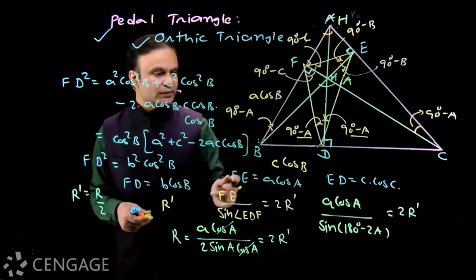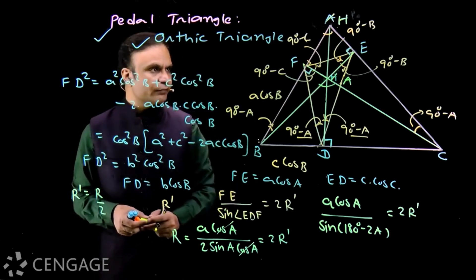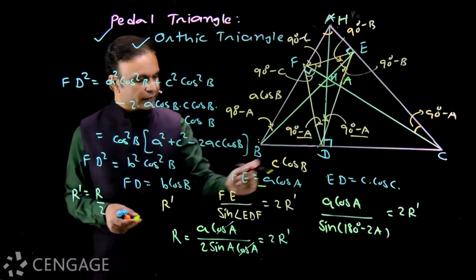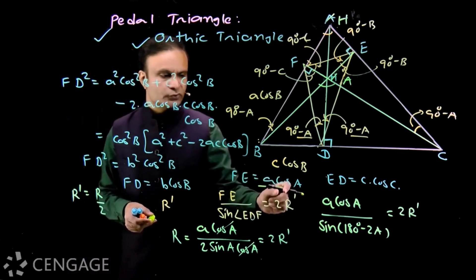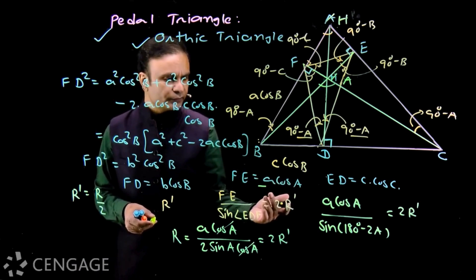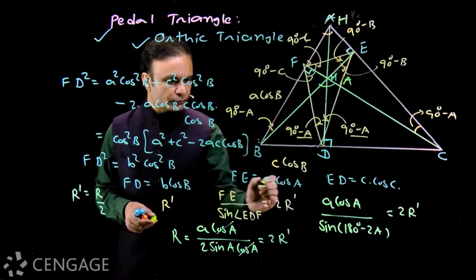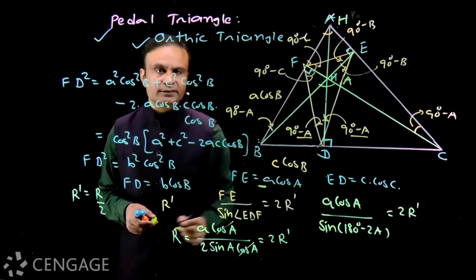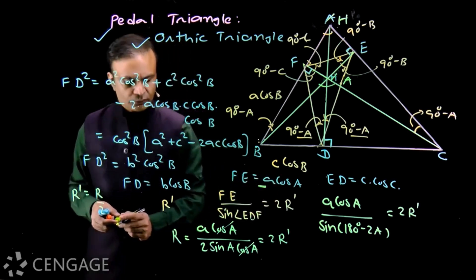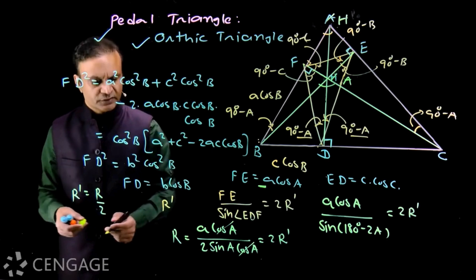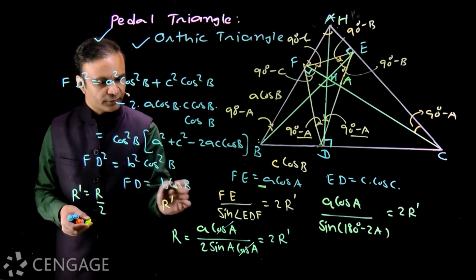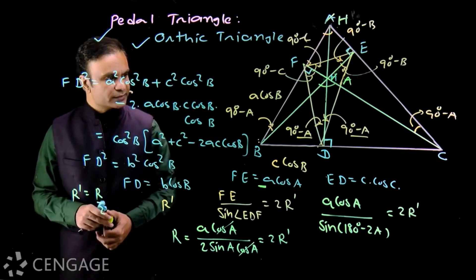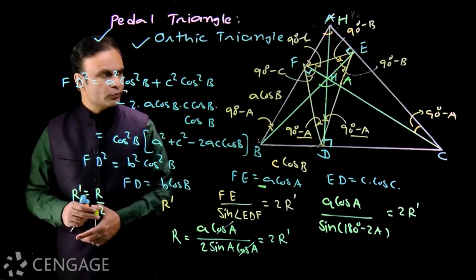For the obtuse case, the length FE becomes −A cos A, because angle A is obtuse and cos A is negative, making the expression carry a minus sign. The expressions for FD and ED remain the same: FD = B cos B and ED = C cos C, since angles B and C are still acute.